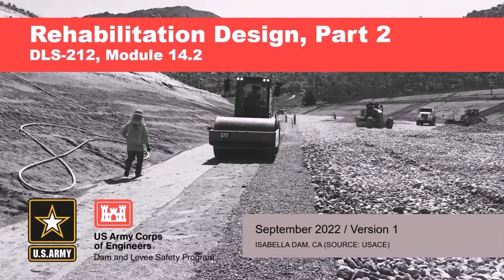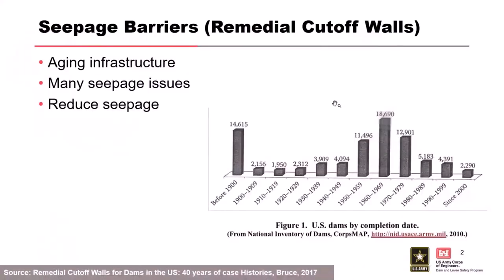We're in Part 2 on rehabilitation design. This is going to be largely barrier wall driven, with some seismic and slope stability content too. We have aging infrastructure in this country — this histogram shows how many dams were built each decade starting in 1900. The heyday was the 50s through the 70s. The average age of most US infrastructure is over 50 years, so things are aging, settling, behaving differently, leaking, and sliding — more rehab is needed, and more seepage issues.